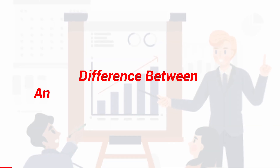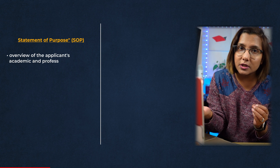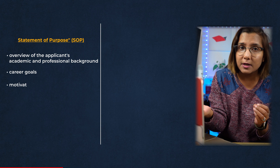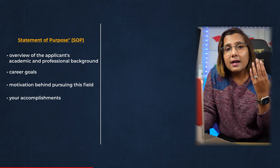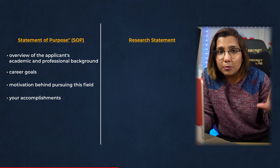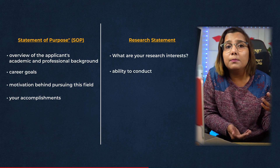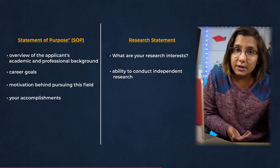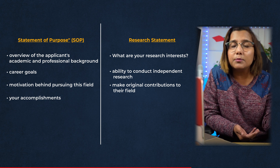First things first, what's the difference between an SOP and a research statement? An SOP is an overall picture of the candidate's profile — it tells the admissions committee about your career goals, your motivation behind pursuing this field, your accomplishments, and why you're the right candidate for that particular MS or PhD position. Whereas a research statement is a very specific document with a very specific goal: to outline what problem you want to work on during your MS or PhD research, demonstrate your ability to conduct that research independently, identify what top problems others are studying, and show how you can make original contributions in that research area.